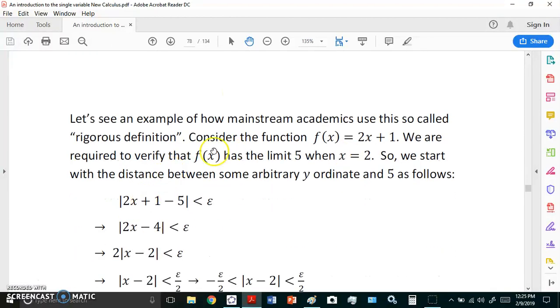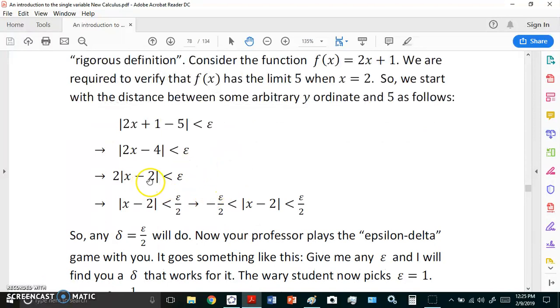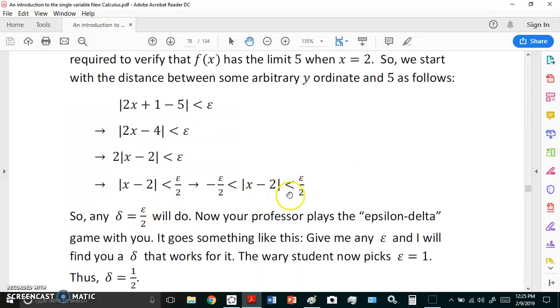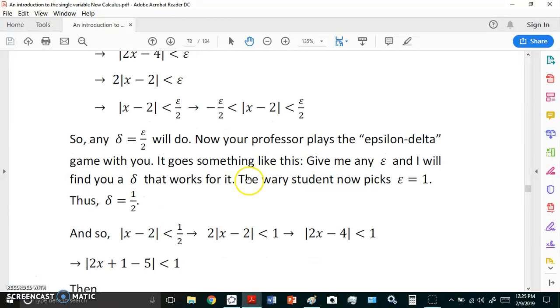So now in this example where we take the function 2x plus 1 it works something like this. You first try to change this distance into the format of f(x) minus the limit. So once you get it to that format then you can find delta in terms of epsilon. So in this case here any epsilon over 2 for delta will do and now your professor will play the epsilon delta game with you. It goes something like this.